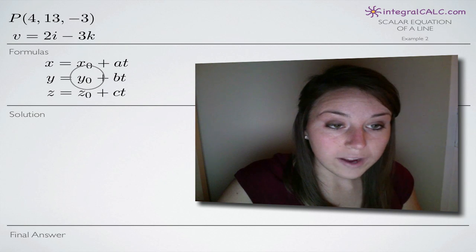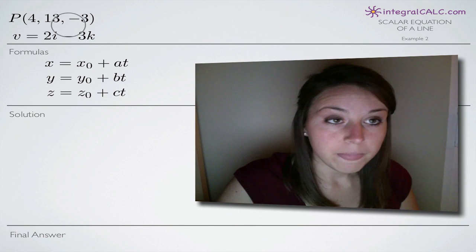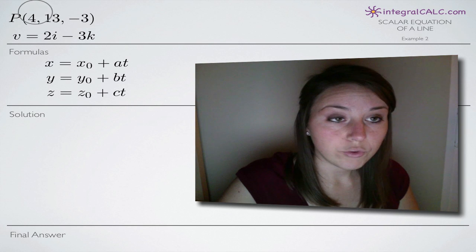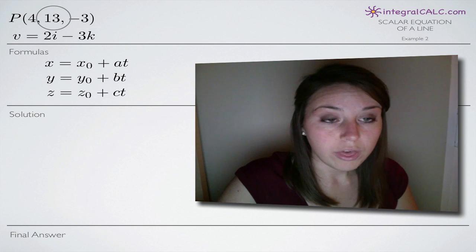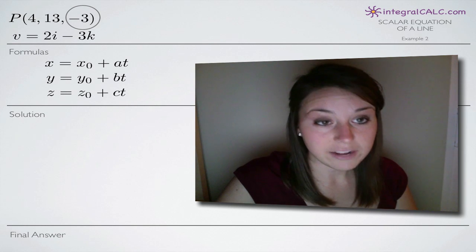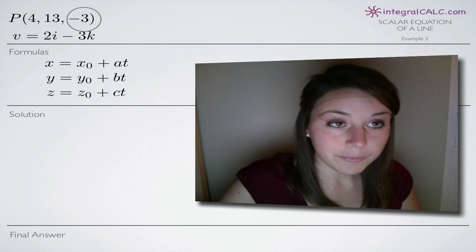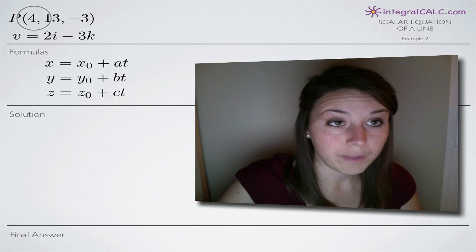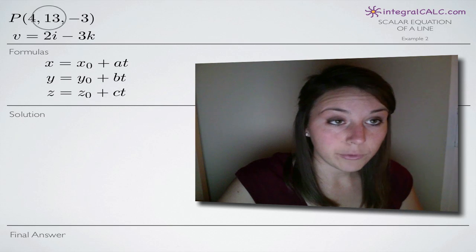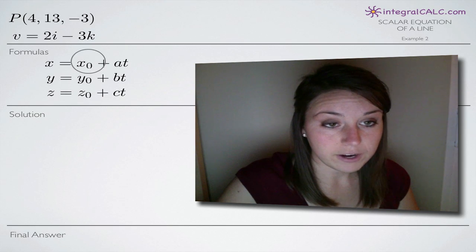We'll get x sub zero, y sub zero and z sub zero from the point P. So we'll plug in 4 for x sub zero, 13 for y sub zero and -3 for z sub zero because our point is always going to come in the form x, y, z. So we'll plug in that information for these three variables here.